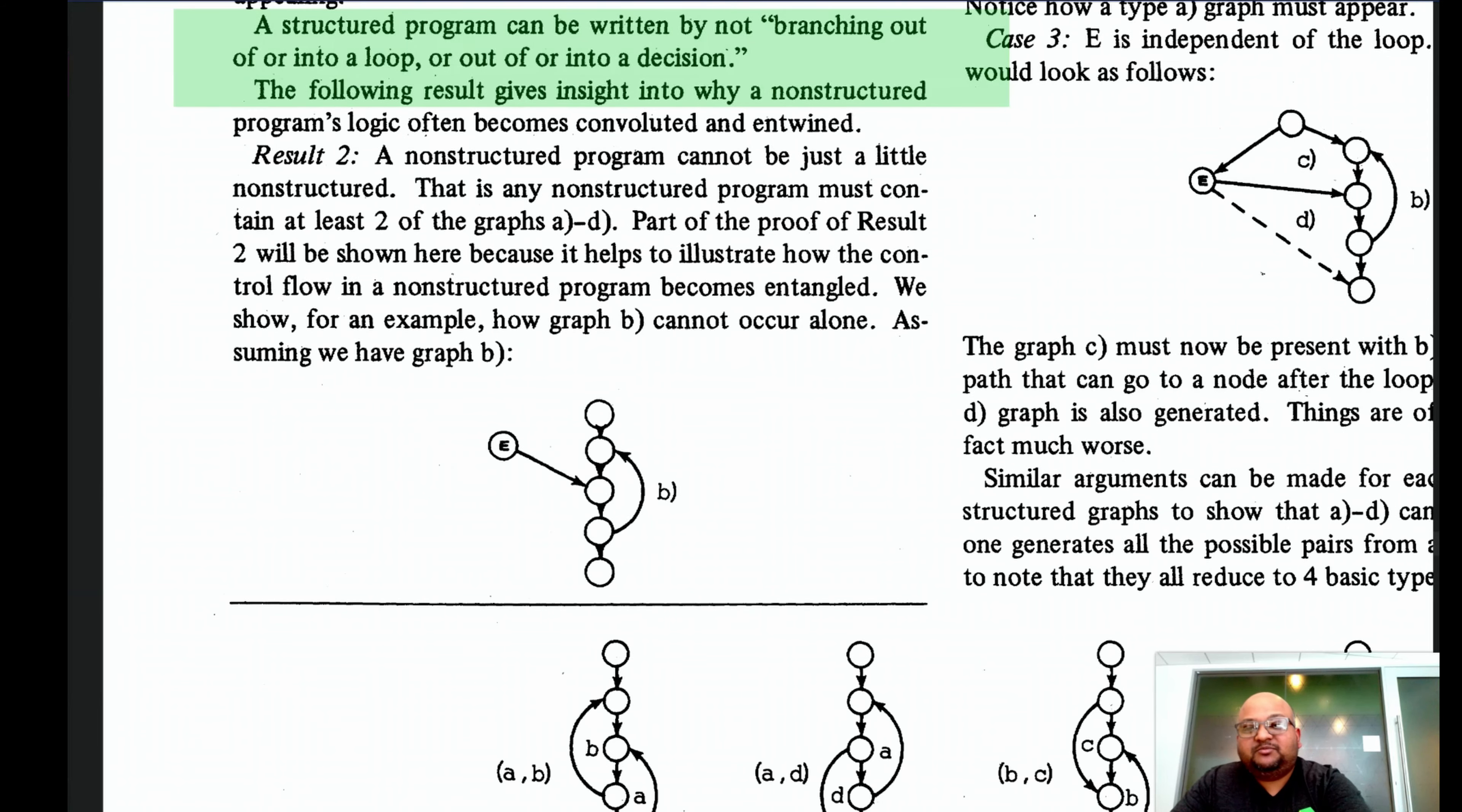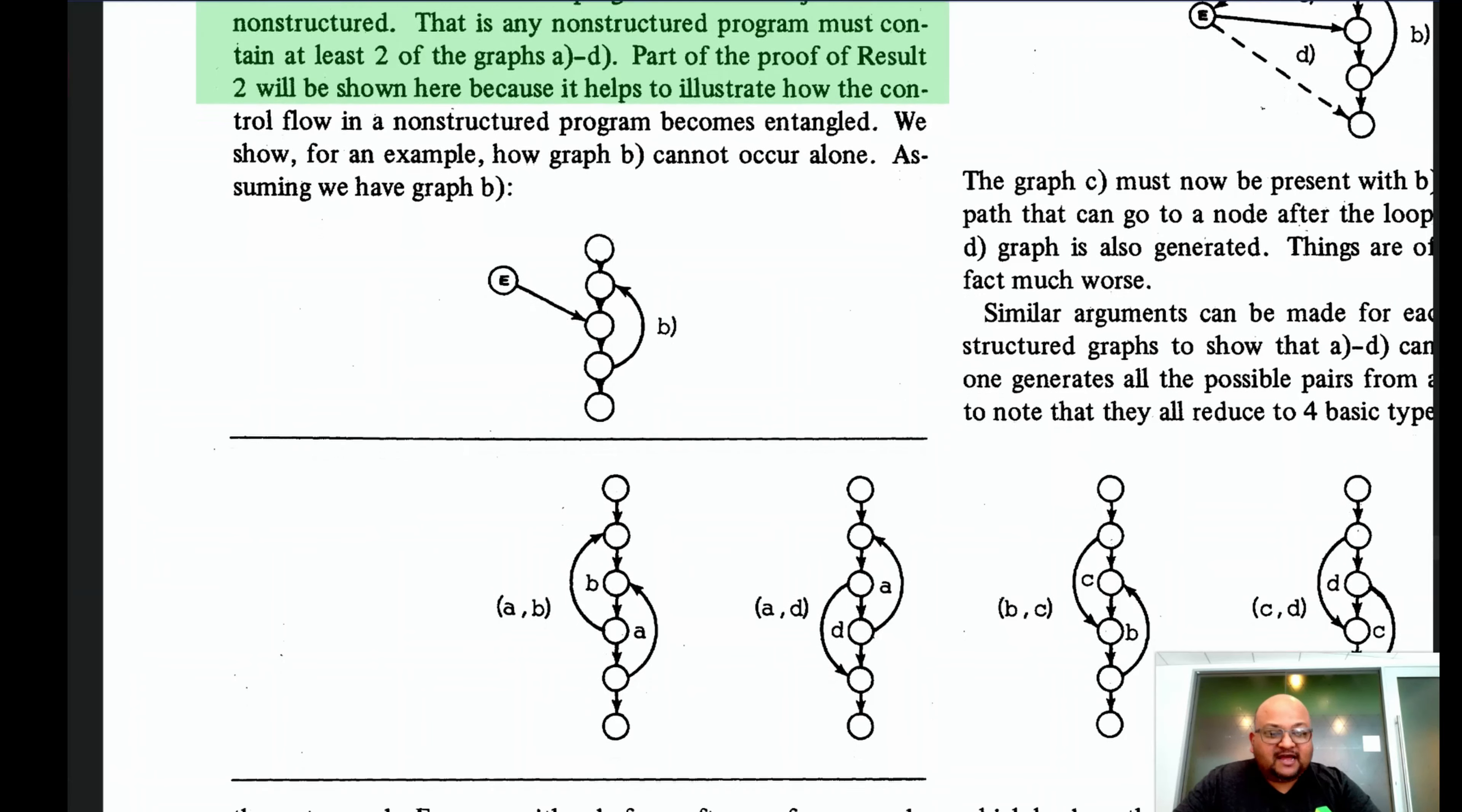Now, here's the somewhat surprising result, which states that an unstructured program cannot be just a little bit unstructured, which is to say that it must contain at least two of those four basic unstructured graphs. You cannot have an unstructured program which contains only one of them. And you can prove that by going on a case-by-case basis through each of those graphs.